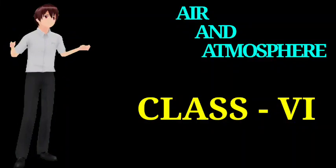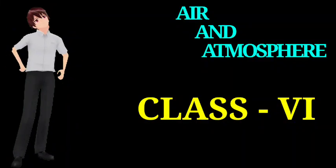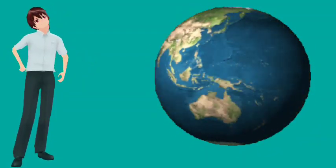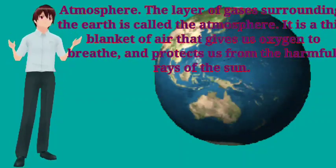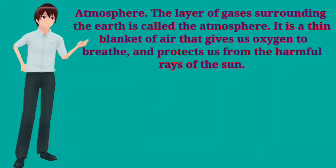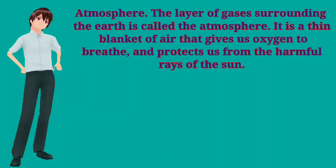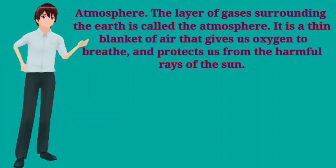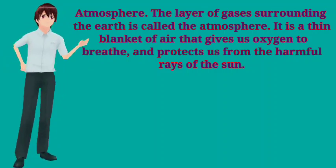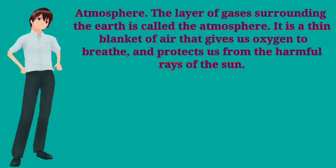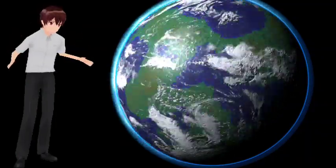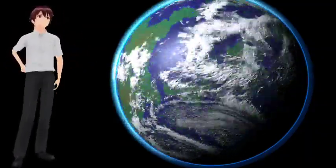Good morning students, today we are going to start a new chapter: air and atmosphere. We know that Earth is surrounded by air, so first we will talk about atmosphere. The layer of gases surrounding the Earth is called the atmosphere. It is a thin blanket of air that gives us oxygen to breathe and protects us from the harmful rays of the Sun. In this figure you can see the thin blue envelope around the Earth — that is called the atmosphere.